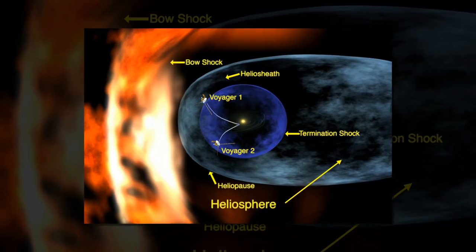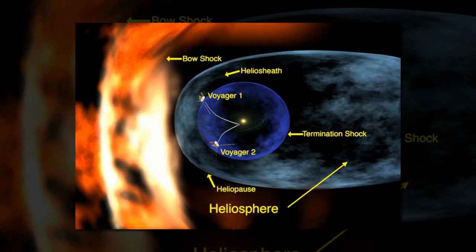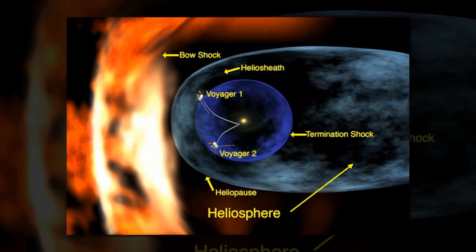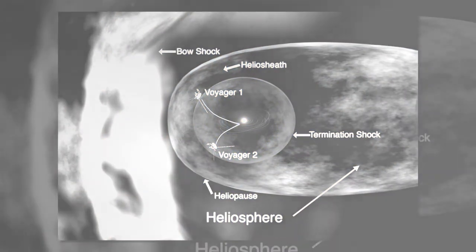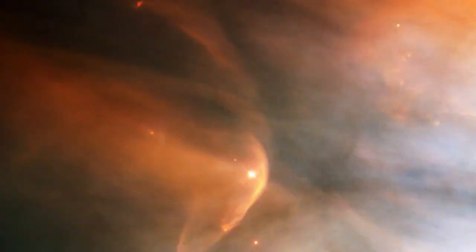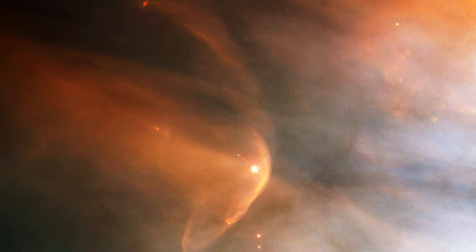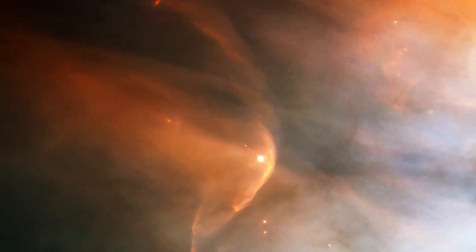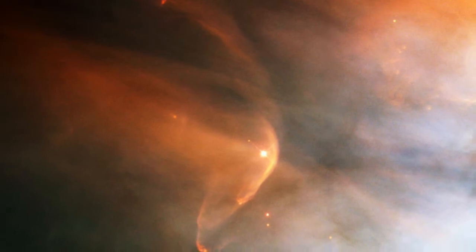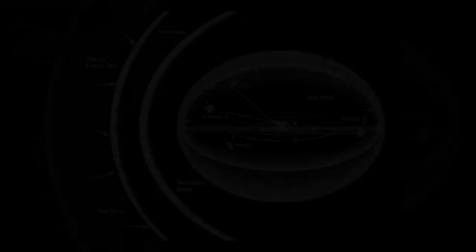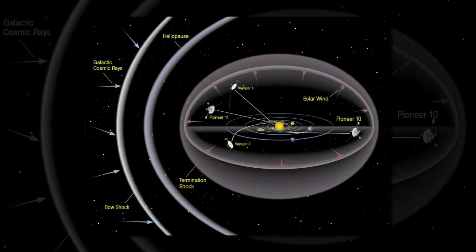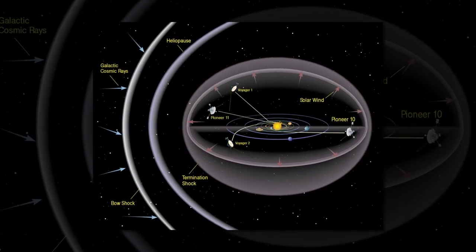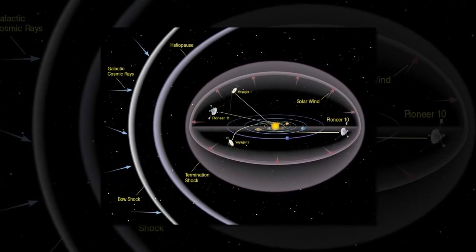When these particles reach the edges of the heliosphere, their motion becomes more complicated. The theory says that some solar wind protons are sent flying back towards the sun as neutral atoms after a complex series of charge exchanges, creating the IBEX ribbon, said Eric Zirnstein, a space scientist at the Southwest Research Institute in San Antonio, Texas, and lead author on the study.